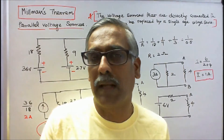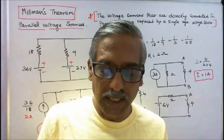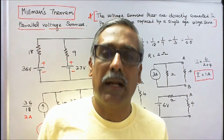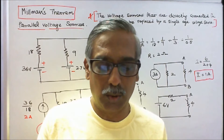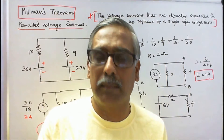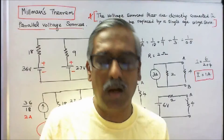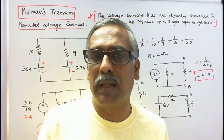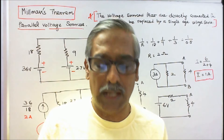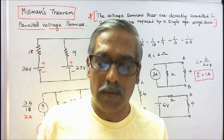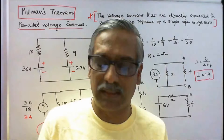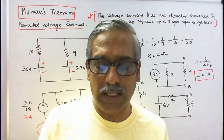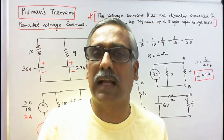Applications of Millman's Theorem: Number one, this theorem helps to combine a number of current sources operating in parallel and has the advantage of being easier to apply to some networks than mesh analysis, node analysis, or superposition. Number two, a voltage source can be converted into a current source, so it can also be applied to a circuit when both current and voltage sources are present. Number three, this theorem is also applicable if the circuit has a mixture of parallel voltage and current sources.